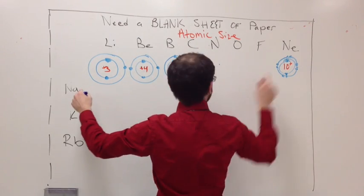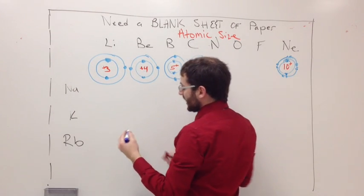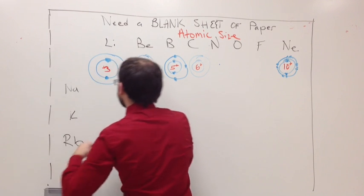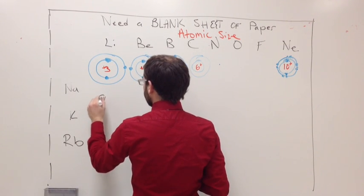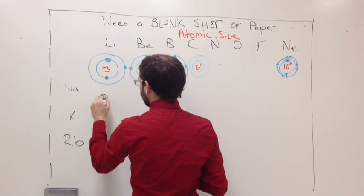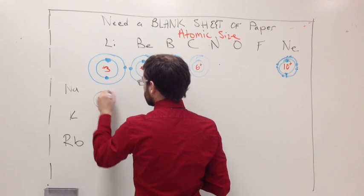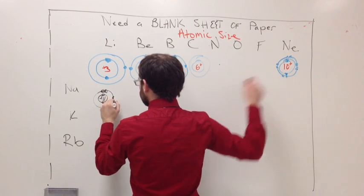As we move down, this was ten. This is eleven. So we need to draw sodium. Sodium down here is going to be plus eleven in the nucleus. And it's going to have those two electrons around it. It's going to have the eight from the same as over here.